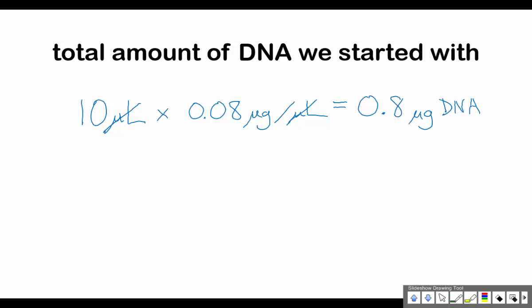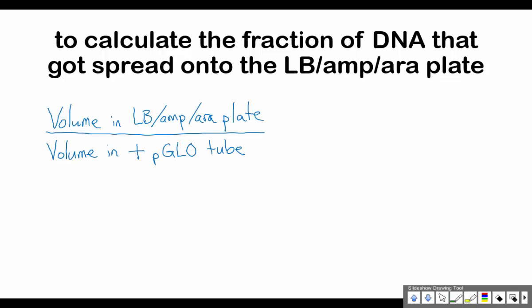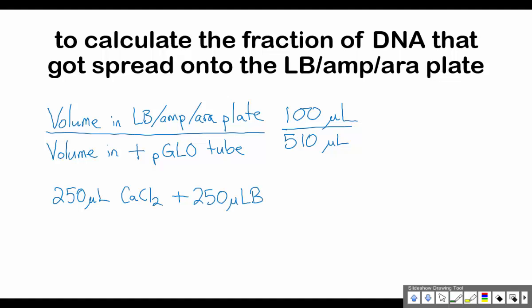To calculate the fraction of DNA spread onto the LB/AMP/ARA plate, we take the volume of the DNA solution put onto the plate divided by the total volume in the pGLO tube. We measured out 100 microliters of the solution, and the total amount in the tube was 510 microliters — 250 microliters of calcium chloride transformation solution, 250 microliters of Luria broth, and 10 microliters of the plasmid solution. So 100 divided by 510 gives a fraction of 0.1960784.